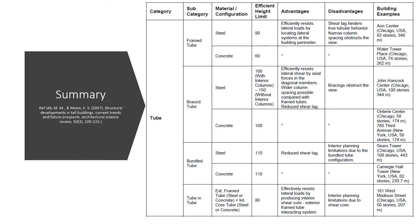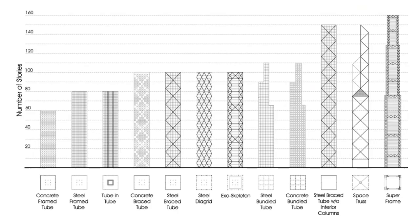This is the summary of the disadvantages and advantages of every type of tube system, along with a comparison of effective heights for the different tall building structural systems.